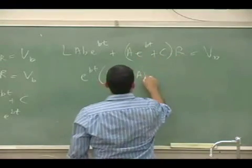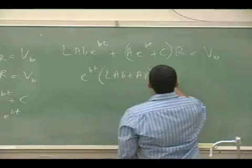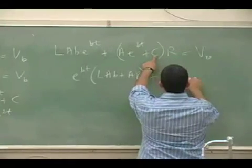Then you multiply the R into this, and it'll be AR, and then you'll be left with CR is equal to VB.